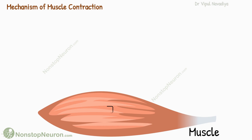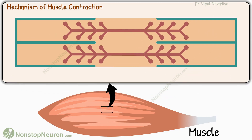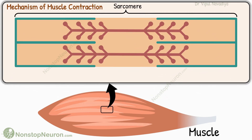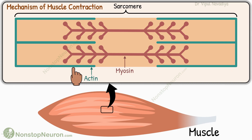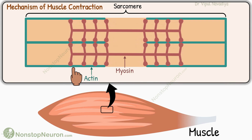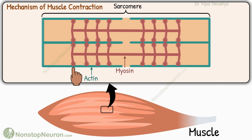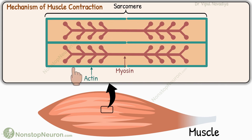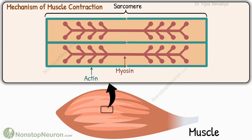This is a muscle. The contractile unit of muscle cells is a sarcomere. It has actin and myosin filaments. These are Z-discs where adjacent sarcomeres are connected. For contraction, the myosin heads pull the actin filaments toward the center of the sarcomere. Continuous pulling like this results in the shortening of the sarcomere, and such shortening in all sarcomeres combined produces muscle contraction.